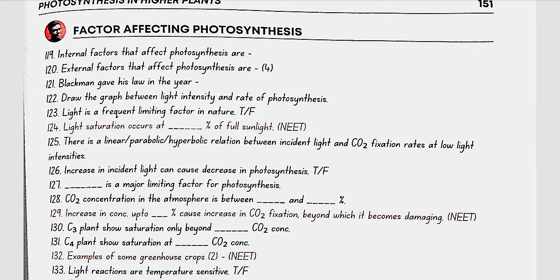Factors affecting photosynthesis: internal factors include the number, size, age, and orientation of leaves, mesophyll cells and chloroplasts, internal CO2 concentration, and amount of chlorophyll. External factors include sunlight, temperature, CO2, and water. Blackman gave his law of limiting factors in the year 1905.